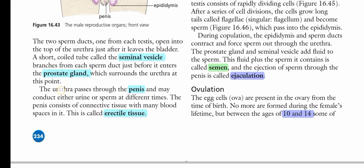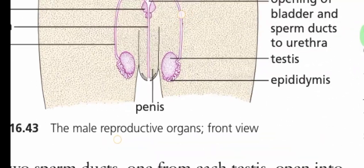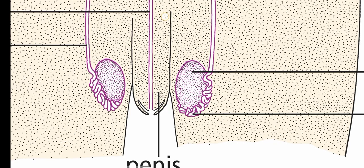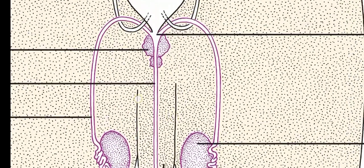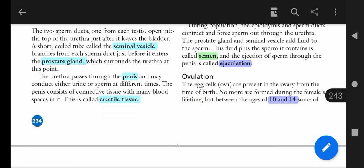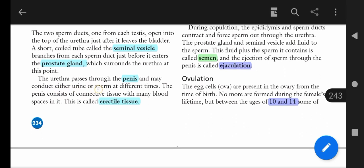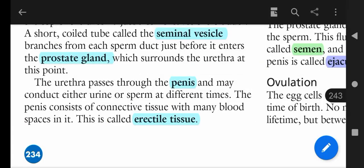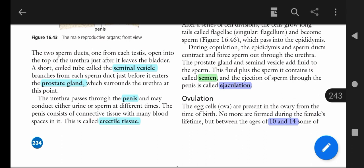The prostate gland surrounds the urethra, which then passes through the penis — you can see here the urethra is the red or pink tube running through the penis. The urethra may conduct either urine or sperm at different times. The main difference between the male and female urethra is that in females, the urethra opens separately in front of the vagina and has no relation to the reproductive system. In males, the same urethra tube is used for both sperm removal during sexual intercourse and urine removal.